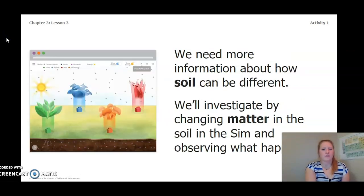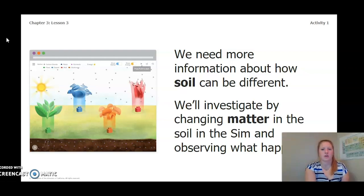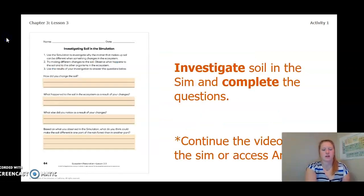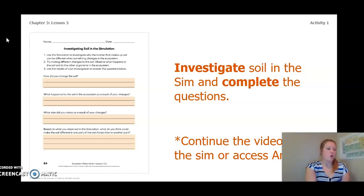We need to know more information about soil and how it can be different. We'll investigate by changing matter in the soil in the simulation and observing what happens. As we investigate the soil in the sim, we're going to complete some questions. These can be found on page 64 of your Ecosystem Restoration Workbook or on page 3 of your Chapter 3 Lesson 3 Activity Packet.